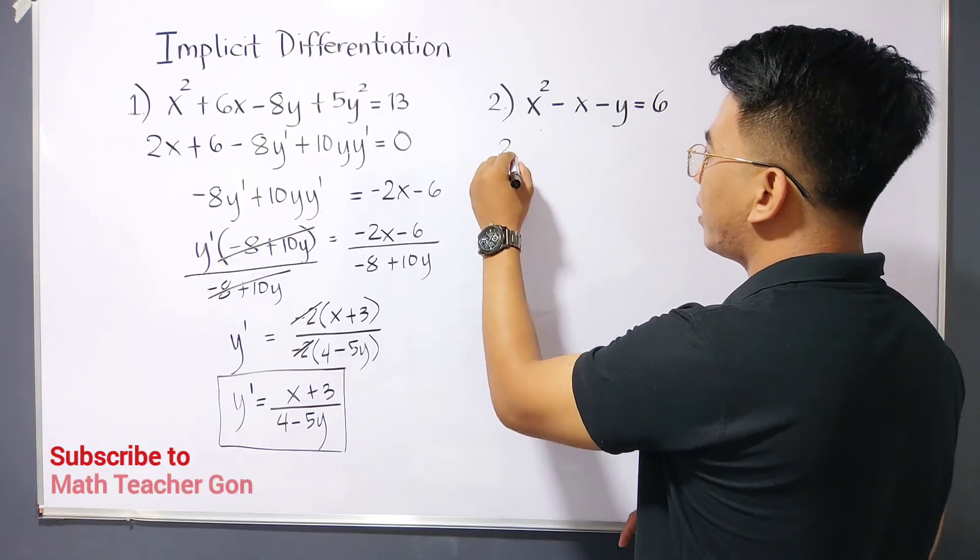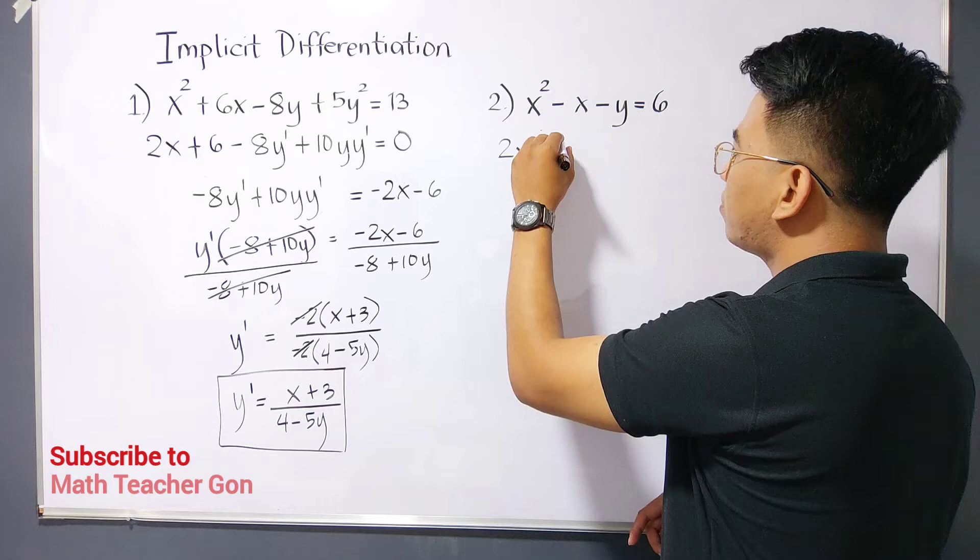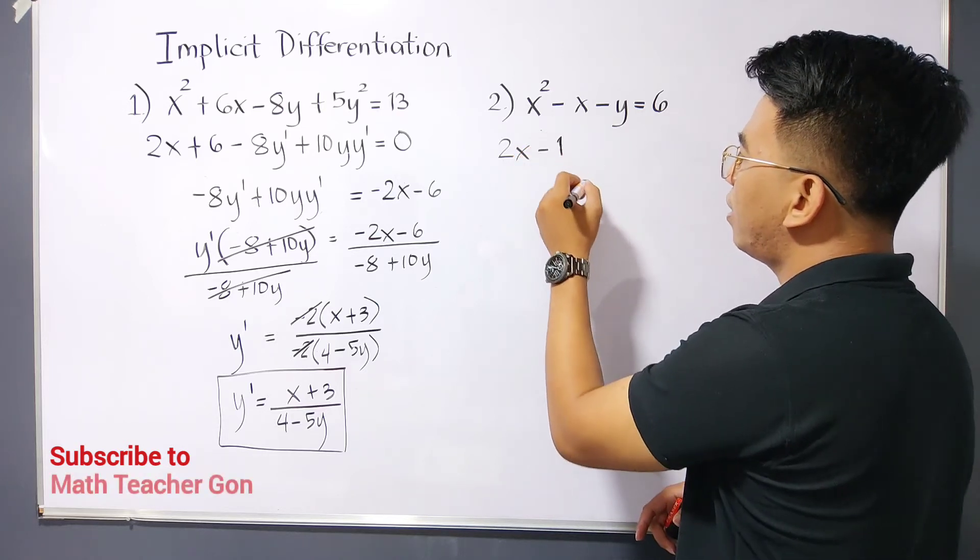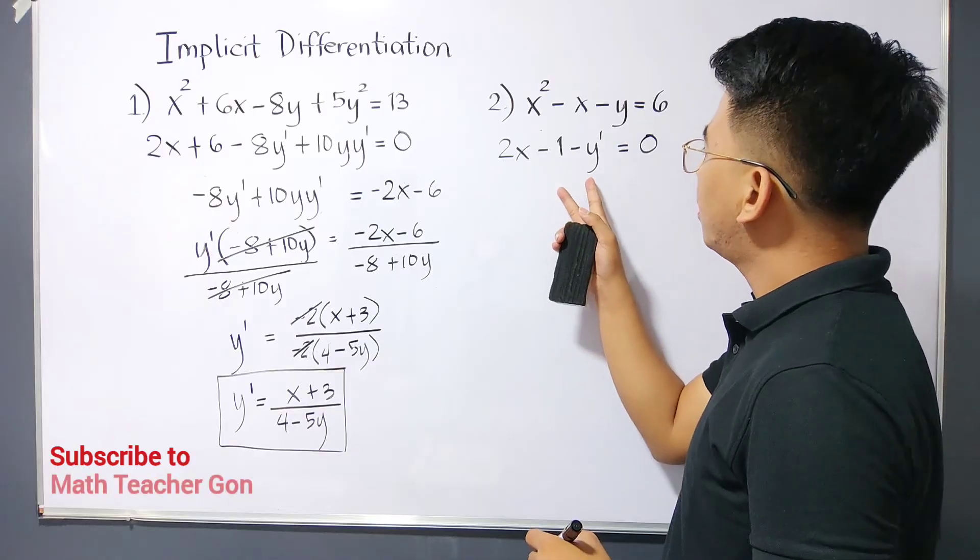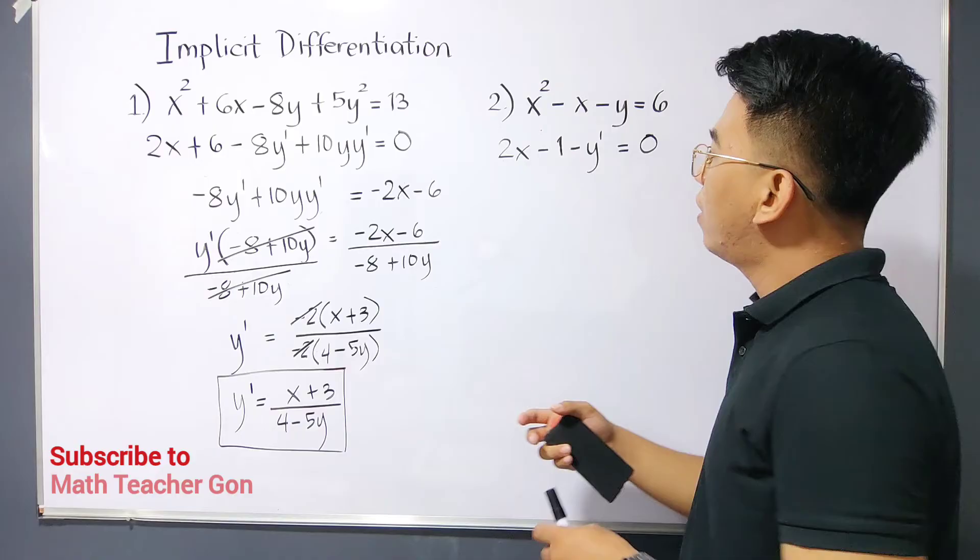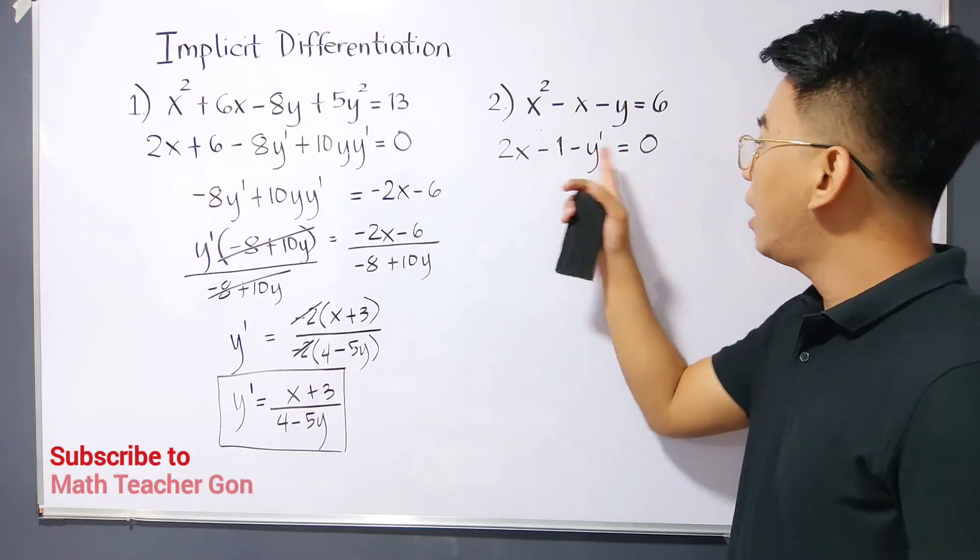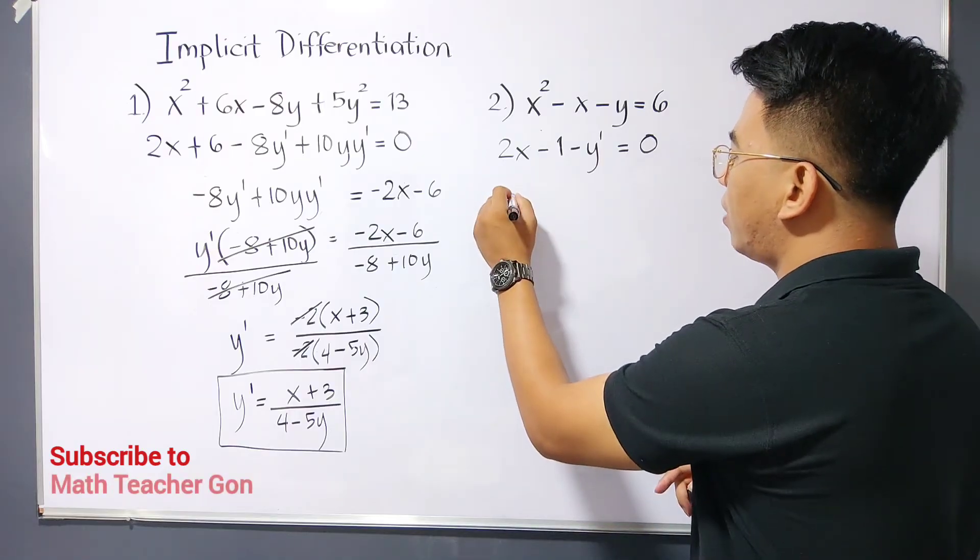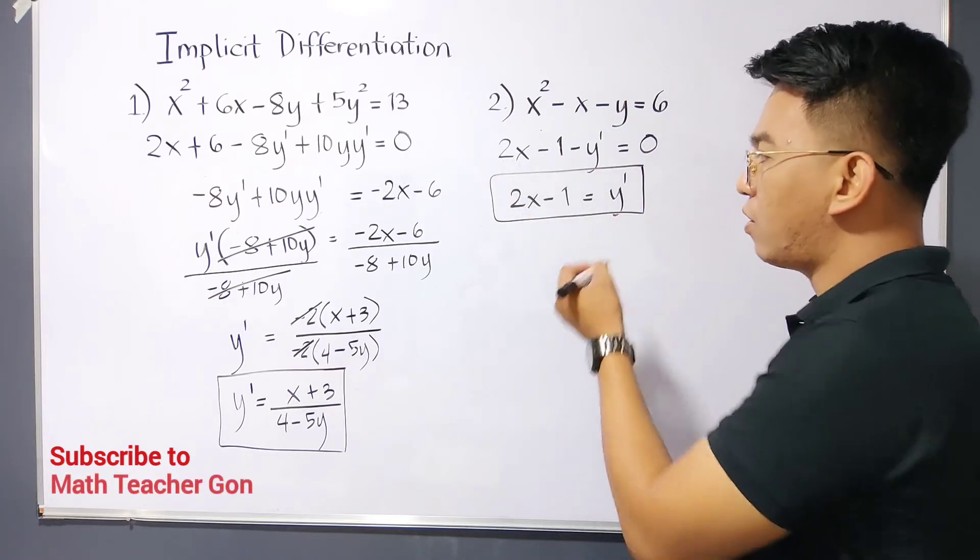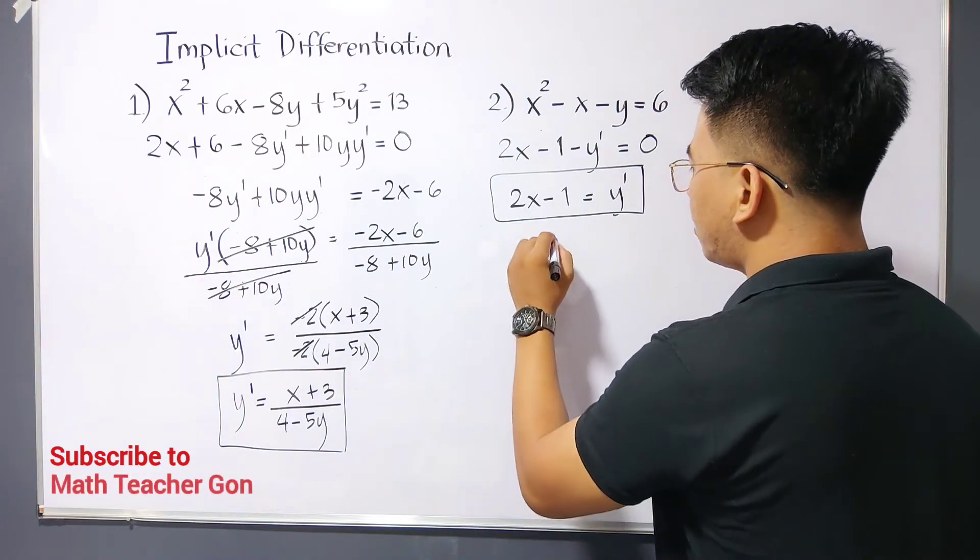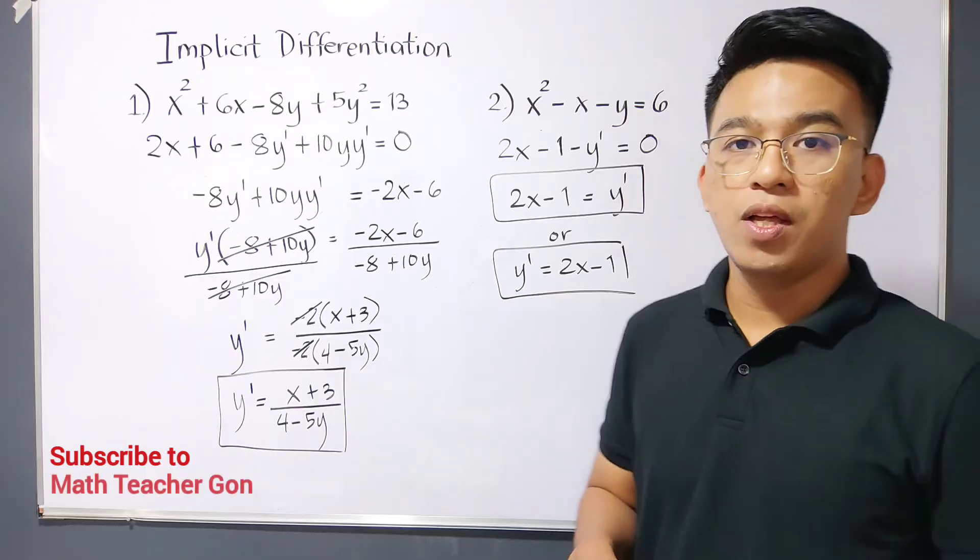Differentiate this one: x squared is 2x. For negative x, that is negative 1. The derivative of negative y is negative y prime, and the derivative of your constant is 0. As you can see, negative y prime is already isolated by itself. Instead of transposing 2x and negative 1 to the other side, I'll transpose negative y prime. It becomes 2x minus 1 equals positive y prime. We can consider this as an answer, or we can flip it: y prime equals 2x minus 1. This is now the answer for item number 2.